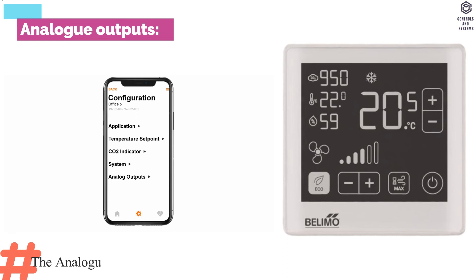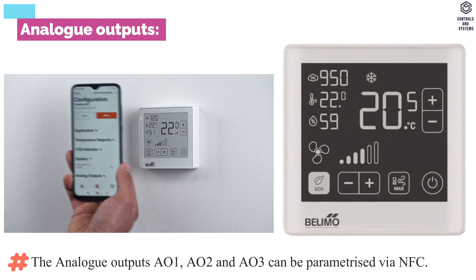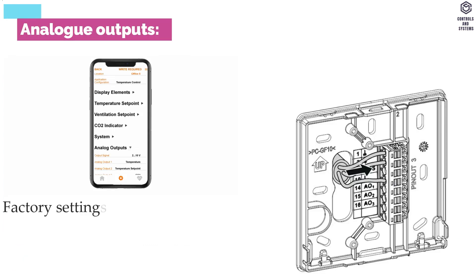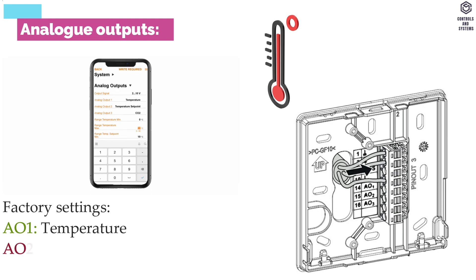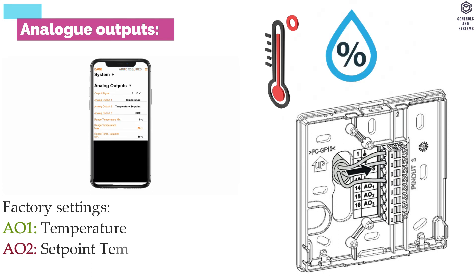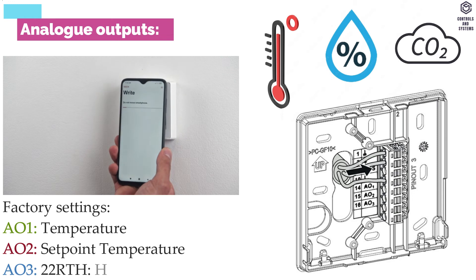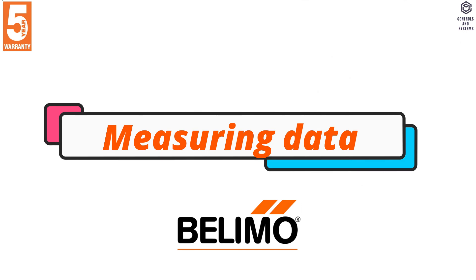Analog outputs: The analog outputs AO1, AO2, and AO3 can be parameterized via NFC. Factory settings are: AO1 — temperature; AO2 — set point temperature; AO3 — humidity for the 22RTH model device, and CO2 for the 22RTM model device.